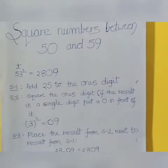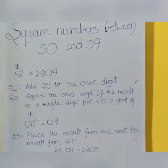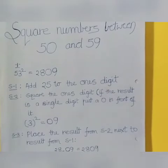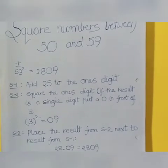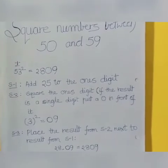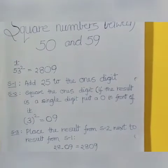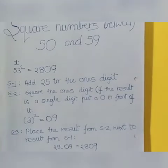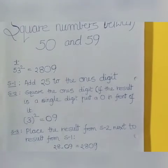When we have to do 53 square, the ones digit is present. What do we do? We will add 25 to the ones digit and get the result. Then, we will square the ones digit and combine them. So, when you learn the technique, you will do the long calculations in a few seconds and the more practice you do, the faster you will understand.